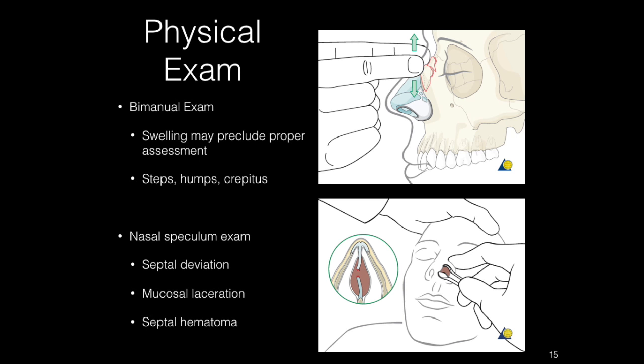A flat, broad tip or abnormal widening may be a sign of recent or past cartilaginous injury. The external nose should be examined via bimanual digital palpation. Steps, humps, crepitus, and point tenderness are all signs of nasal bone fractures, and step deformities are diagnostic of fracture sites, old or new. Ecchymosis or the presence of a hematoma should also be noted. Intranasal anatomy should be assessed using a nasal speculum, looking for septal deviation, mucosal laceration, or septal hematoma. In most cases, post-traumatic edema will mask subtle deformities, and a more accurate external examination is possible after resolution of swelling two to four days after the injury.